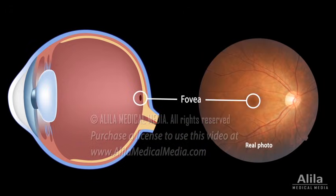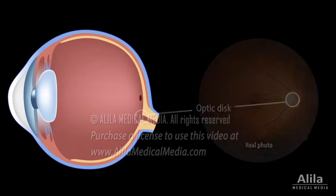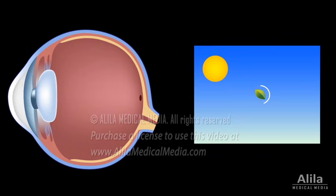The fovea is the central part of the retina where the sharpest central vision is achievable. The optic disc, where the optic nerve leaves the eye, has no photoreceptor cells. It corresponds to the blind spot in the visual field. If an object falls on that spot, it would generate no visual information.